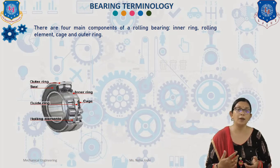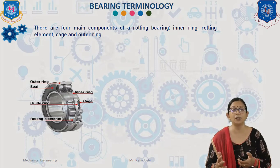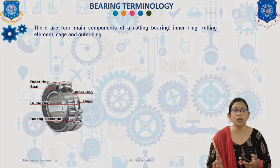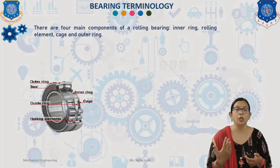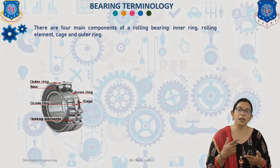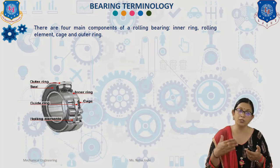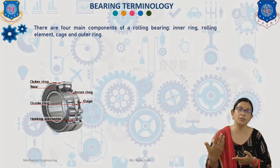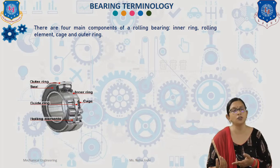The third element is the rolling elements. These separate the inner and outer ring and permit the bearing to rotate with minimal friction. Rolling elements can be either balls, cylindrical rollers, spherical rollers, tapered rollers, or needles in the case of needle bearings.